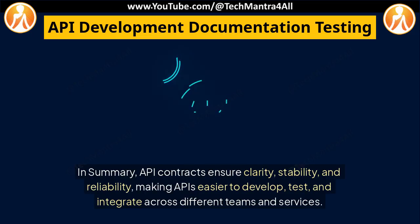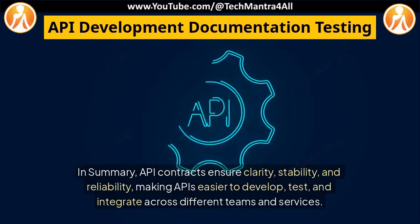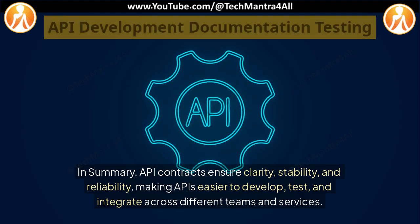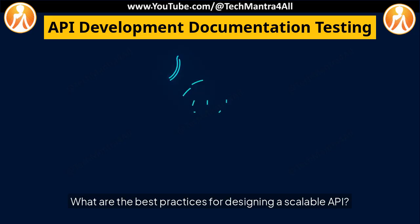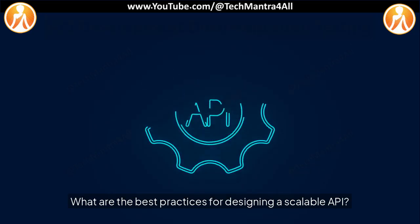In summary, API contracts ensure clarity, stability, and reliability, making APIs easier to develop, test, and integrate across different teams and services. What are the best practices for designing a scalable API?